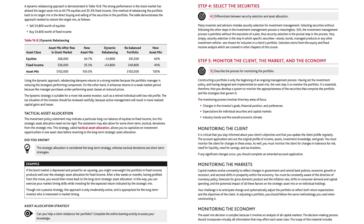Step 5: Monitor the client, the market, and the economy. Constructing a portfolio is only the beginning of an ongoing management process. Having set the investment policy and having designed and implemented an asset mix, the next step is to monitor the portfolio. You must develop a system to monitor the appropriateness of the securities and the strategies that govern it. The monitoring process involves three key areas of focus: changes in the investor's goals, financial position, and preferences; expectations for individual securities and capital markets; and industry trends and the overall economic climate.